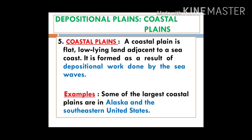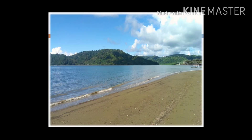The next category of depositional plain is the coastal plain. The name itself tells us that the action of ocean waves has led to the formation of such plains — it is a result of the depositional work done by sea waves. Examples include the plains in Alaska and southeastern United States. You can see in the picture the coast, and beyond it the plain formed by the action of ocean waves.